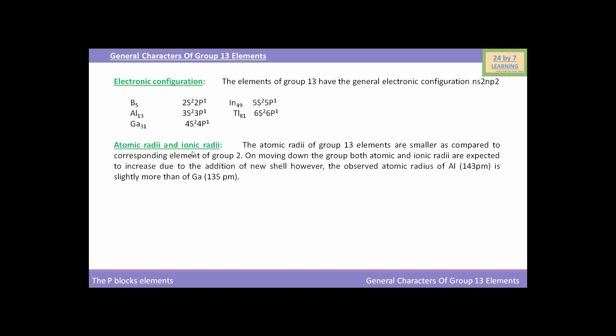Now, come to the atomic and ionic radii. The atomic radii of group 13 elements are smaller as compared to corresponding elements of group 2. On moving down the group, both atomic and ionic radii are expected to increase due to the addition of new shell. However, the observed atomic radius of aluminum, 143 pm, is slightly more than that of gallium, 135 pm.